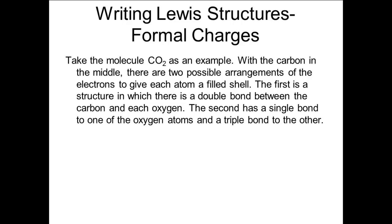In one way, each oxygen atom uses a pair of its electrons to make the bond, making two double bonds. In the other, four electrons come from one of the oxygen atoms and none from the other, producing a single bond and a triple bond. We have two equivalent structures for this, one each for the triple bond to each of the oxygen atoms.